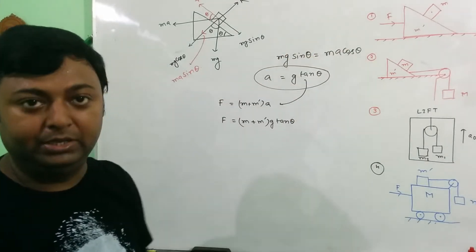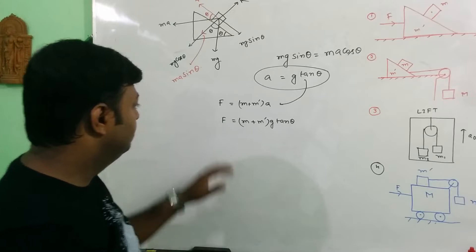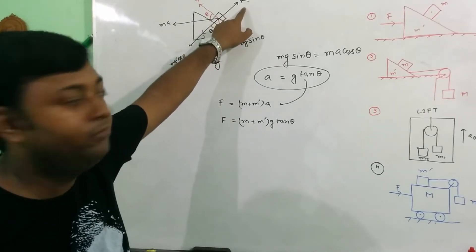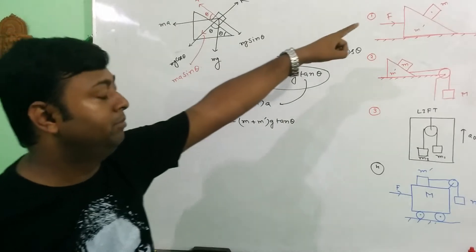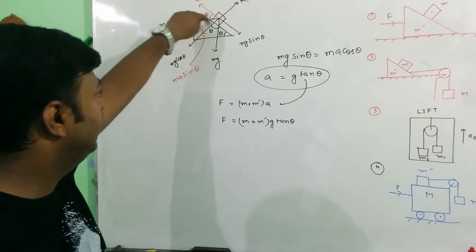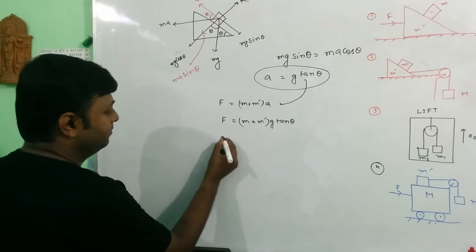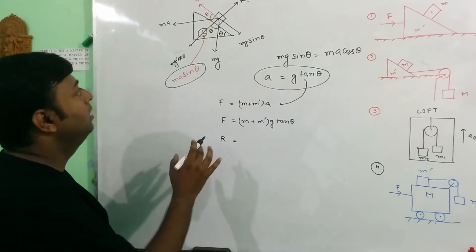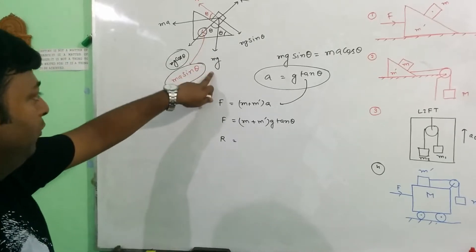If we apply this force, then the body — that is mass small m — on the wedge is not moving in a downward direction. Now we find out R: what is the force applied on the wedge by the mass small m? The normal reaction R equals, in the perpendicular direction, the component from the pseudo-force which is ma sin theta, plus mg cos theta due to the weight of the body.